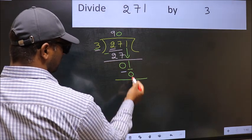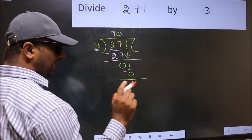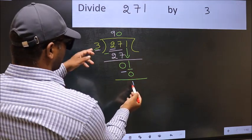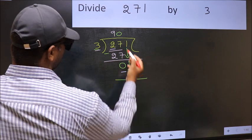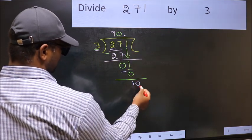Over here, we did not bring any number down, and 1 is smaller than 3. So now you can put a dot and take 0. So 10.